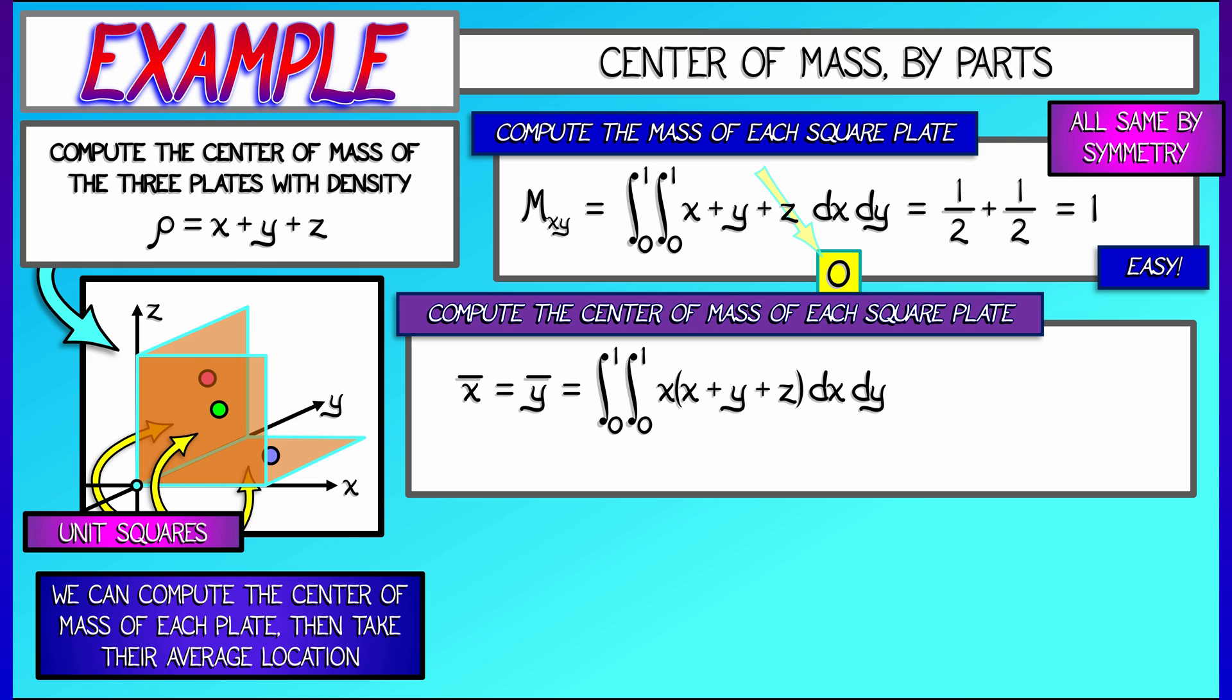I need to integrate x times quantity x plus y plus z. Now again, z is equal to zero. So I integrate x squared plus xy. You can do that, and you can verify that you get one third plus one fourth. That equals seven twelfths.